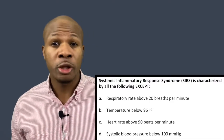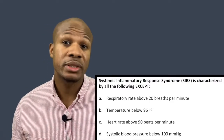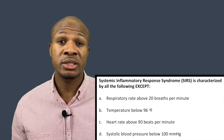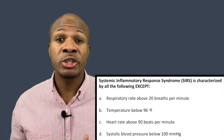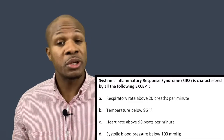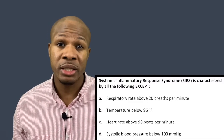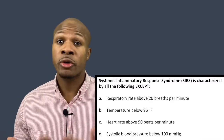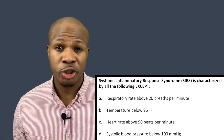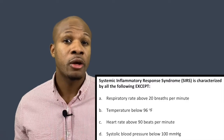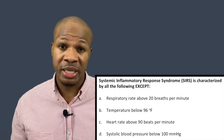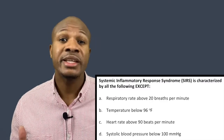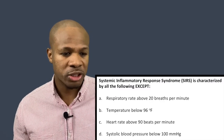Answer choice C says heart rate above 90 beats per minute. This is tied with answer A — you're increasing your breathing rate to get more oxygen, and another way to get more oxygen to the body is for the heart to beat at a faster rate. An increase in heart rate is definitely a sign of distress because it tells you that your body really needs a lot of oxygen to get something done.